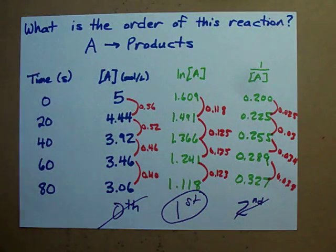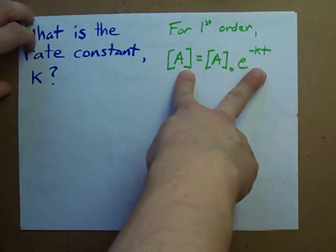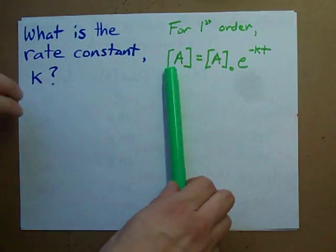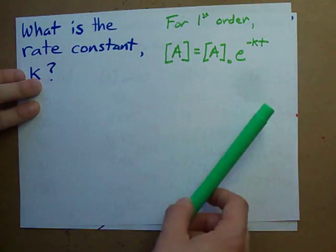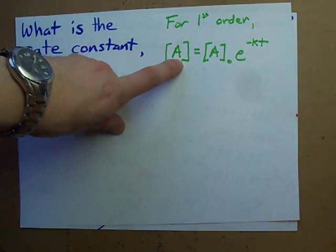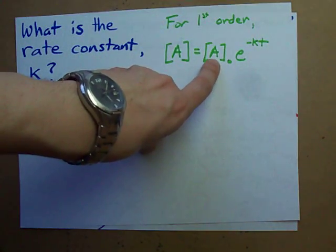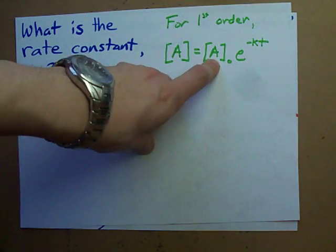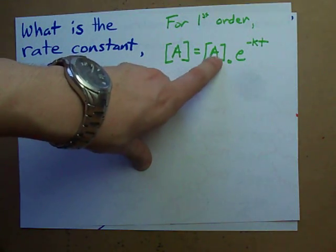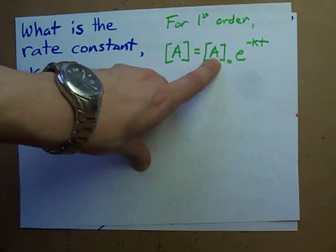And the key to finding the rate constant is knowing the rate law for a first order reaction. What this rate law is, or rather what it means, is that the concentration of the reactant at any time can be calculated if you know the concentration of the reactant at the very beginning. That's what this little subscript zero is. It's called A0, and it's the initial concentration of reactant.